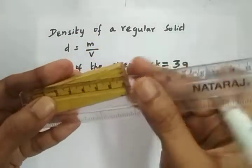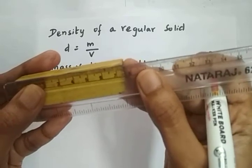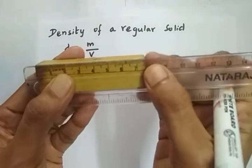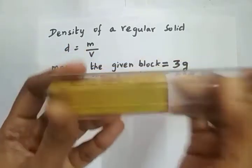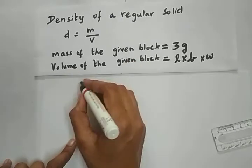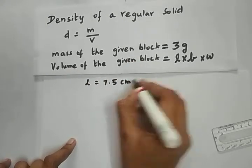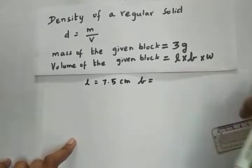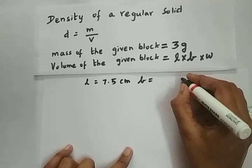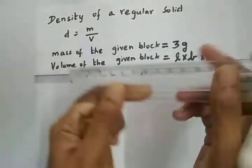Now let us find the length. Make sure you keep the zero edge properly on one end and note down the other edge. The length is 7.5 centimeters. All the dimensions are measured using a scale, represented in centimeters as the scale is graduated in centimeters.